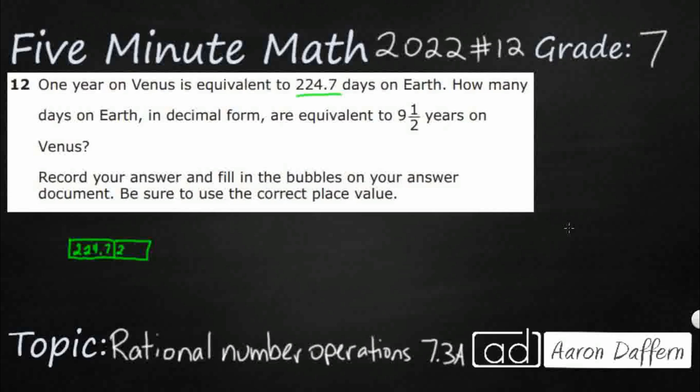So another year is going to be another 224.7. Alright, so I'm just going to keep drawing these years here. 3, 4, 5, 6, 7, 8, 9. So I'm going to just kind of draw this little arrow saying that 224.7 lands in each one of these.